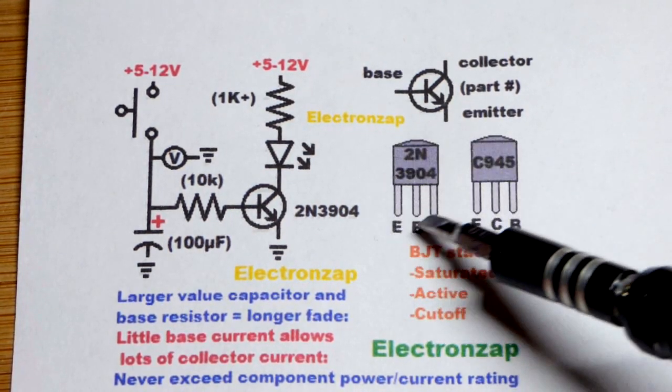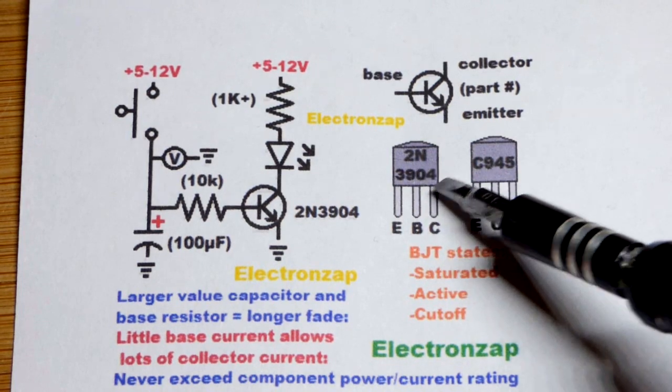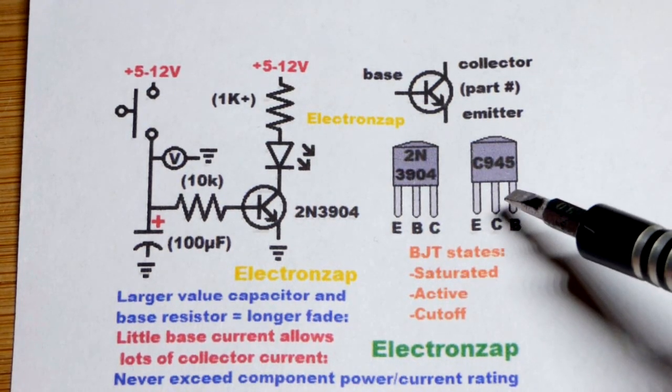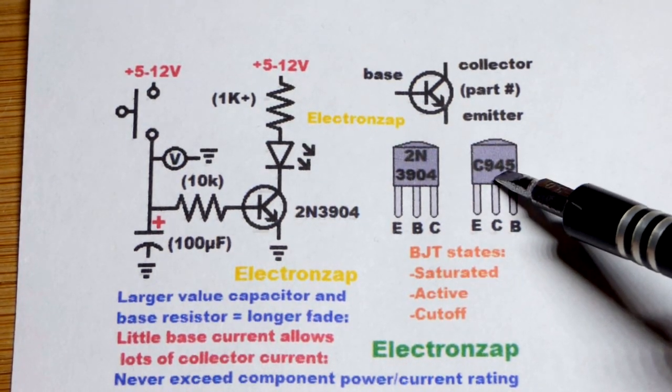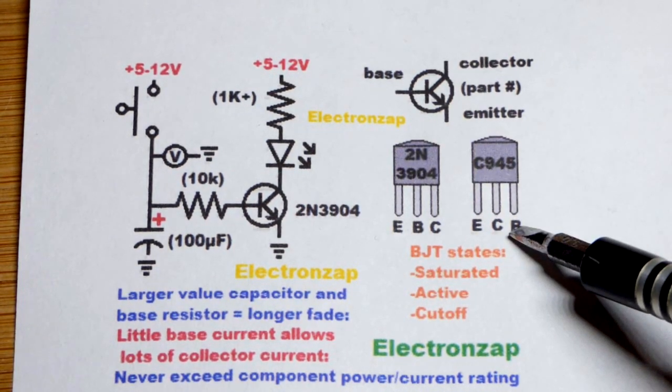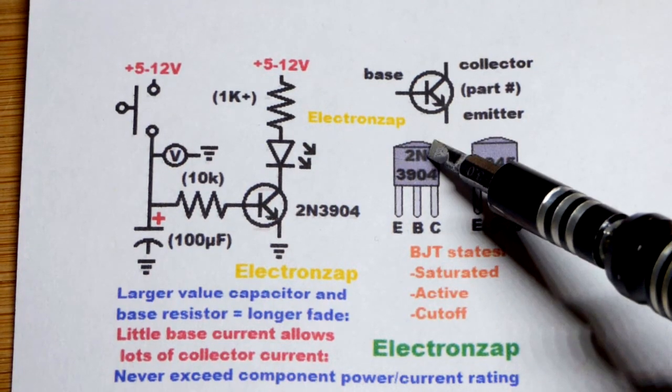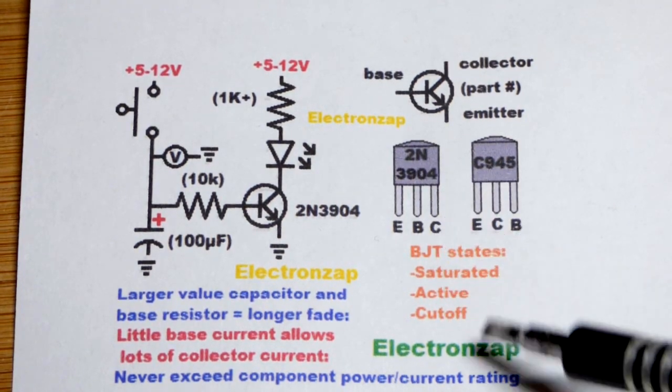And here's the pin layout. I'm using the 2N3904, flat side left pin emitter, middle pin base, right side collector. And when you're looking at the flat side, there's other transistors that will have different pin layouts. Make sure you check the data sheet, but if it's a bipolar junction transistor and starts with 2N, it should have that pin layout.